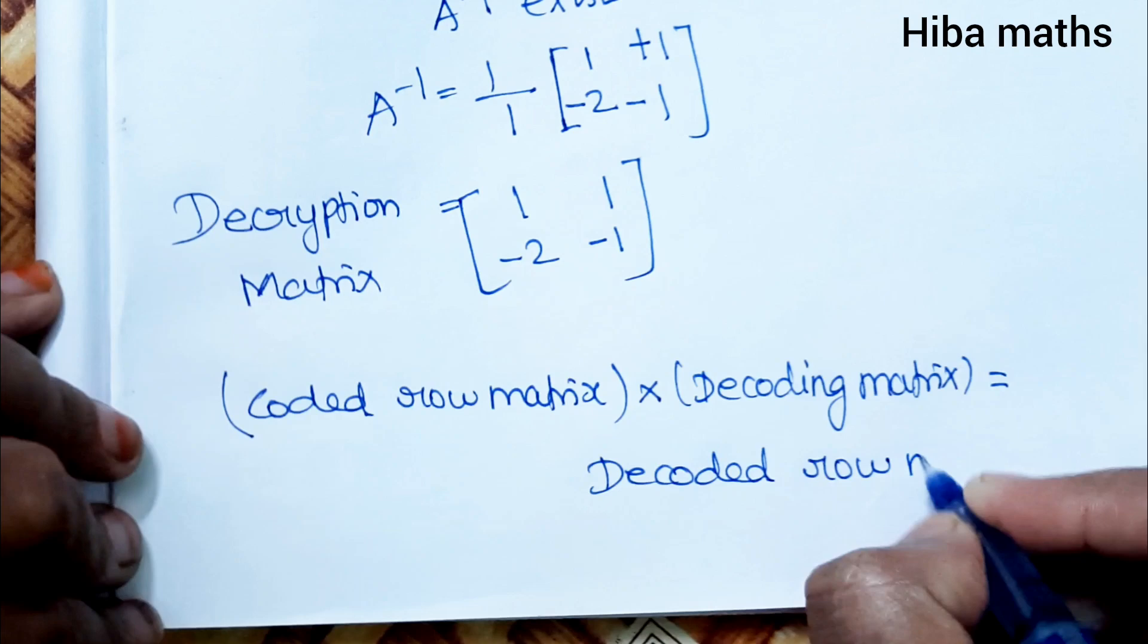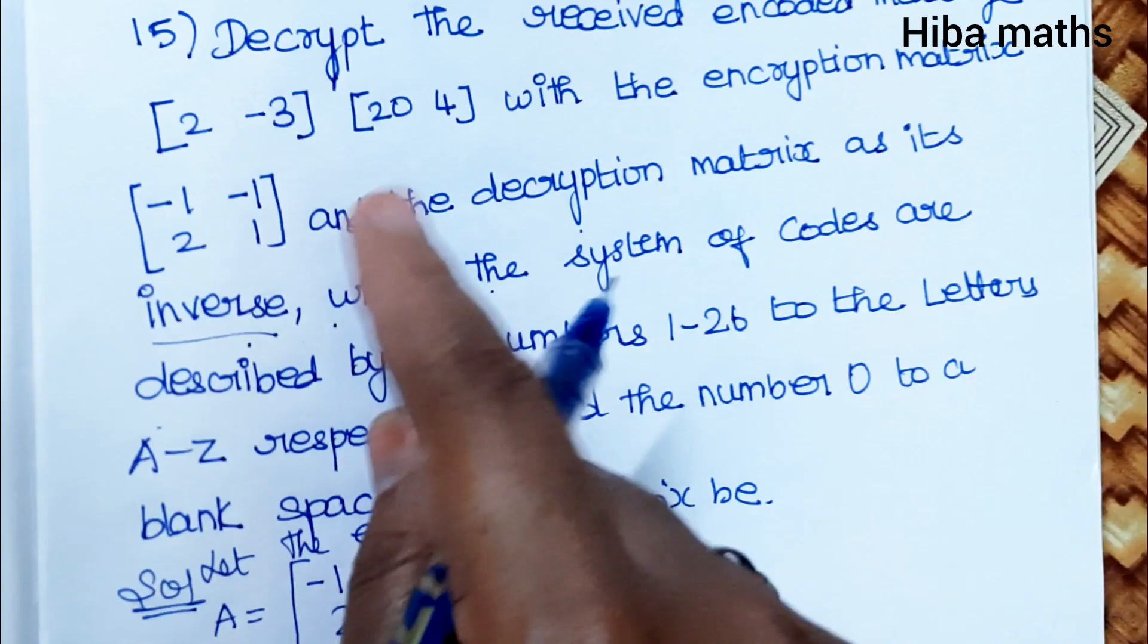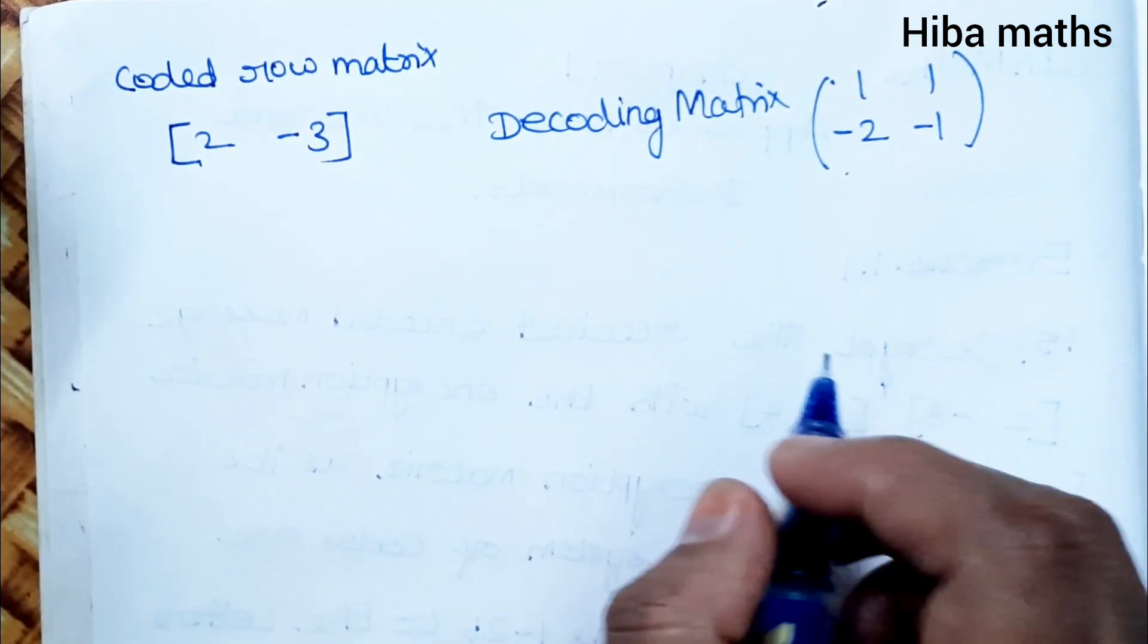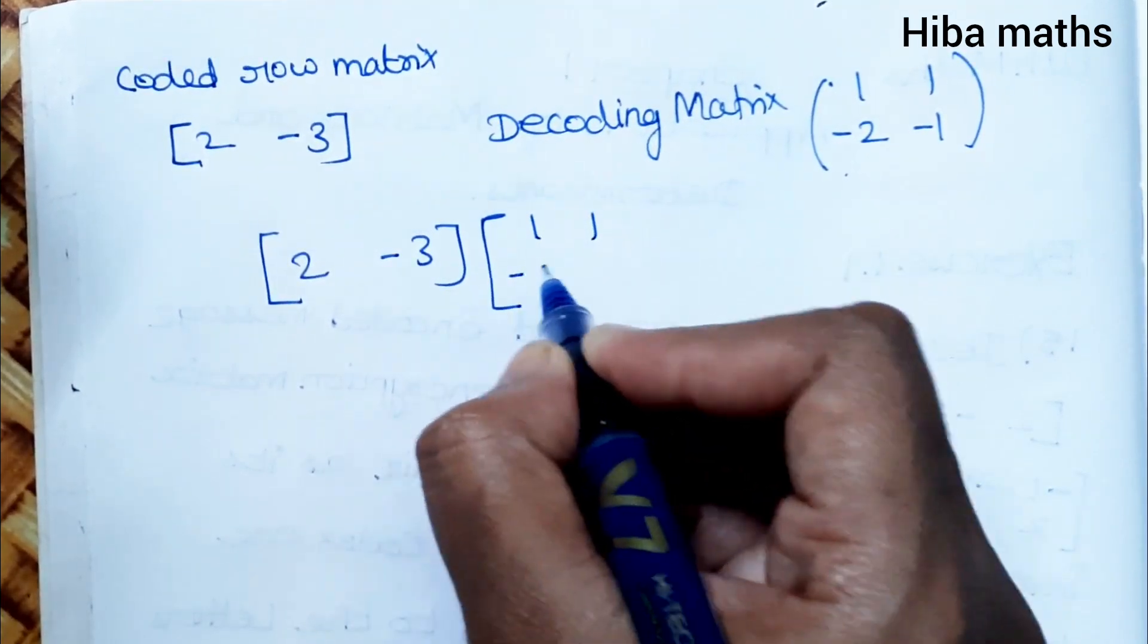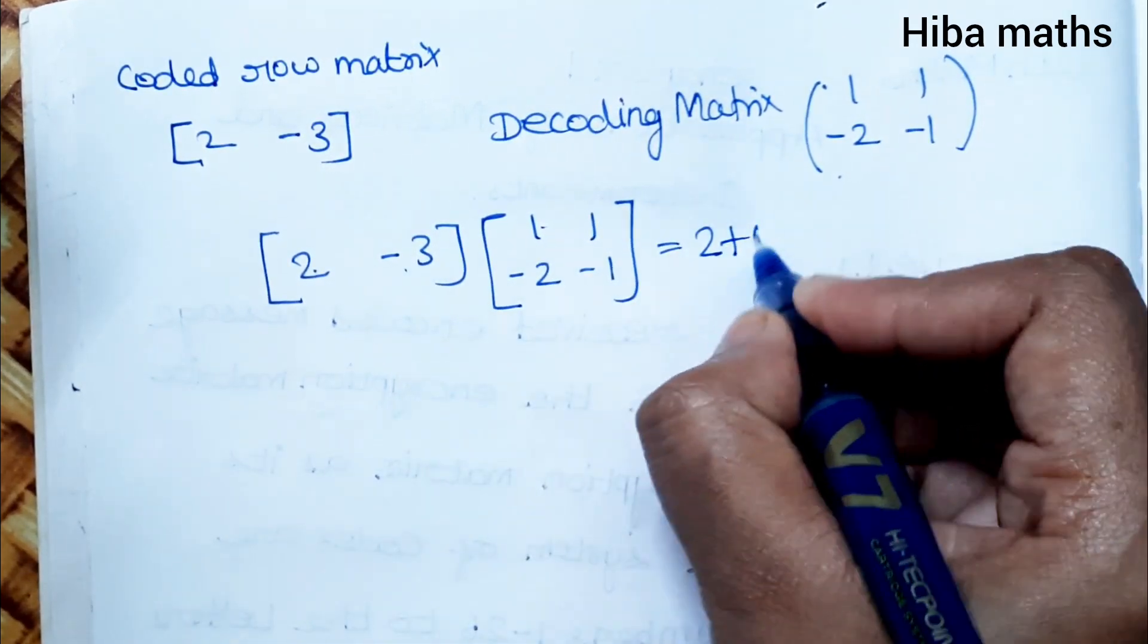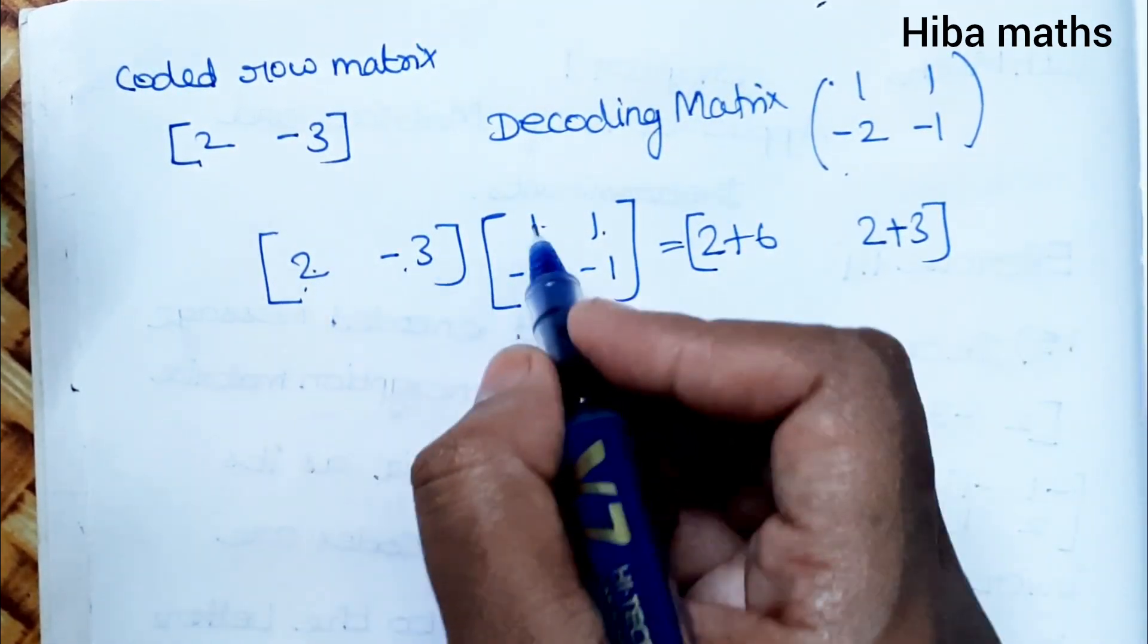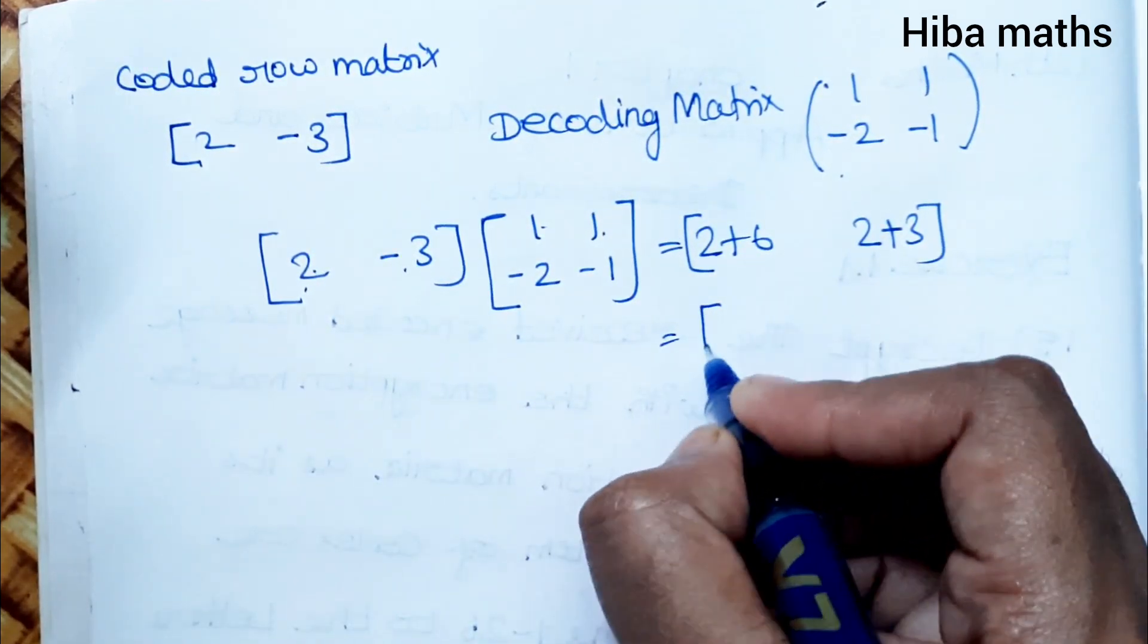First decoded row matrix: [2, -3] times [1, 1; -2, -1]. First row first column: 2 times 1 plus (-3) times (-2) equals 2 plus 6 equals 8. First row second column: 2 times 1 plus (-3) times (-1) equals 2 plus 3 equals 5. So [8, 5].